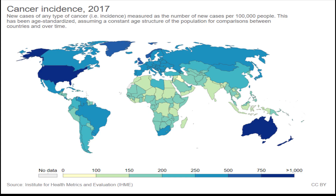2. Prevalence of breast cancer. Breast cancer is the second most common cancer worldwide, affecting both women and, although less frequently, men. The prevalence of breast cancer varies across different countries and populations, but its impact is widespread. According to the World Health Organization, there were approximately 2.3 million new cases of breast cancer diagnosed globally in 2020 alone.